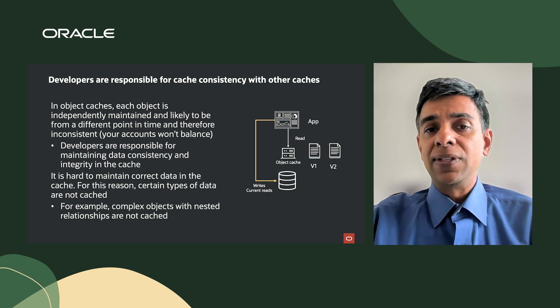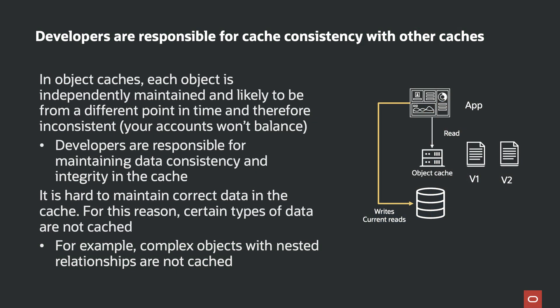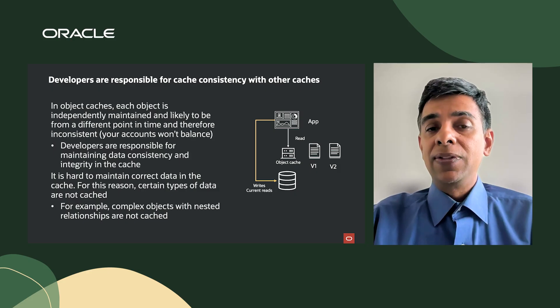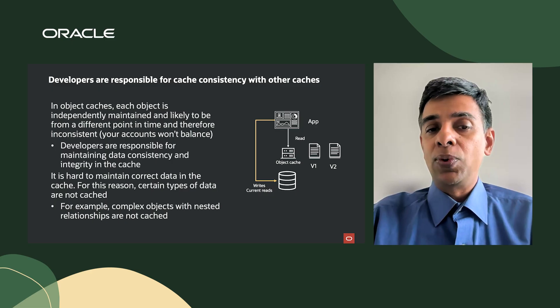Developers are also responsible for cache consistency with other caches. In object caches, each object is independently maintained, likely from a different point in time, and therefore inconsistent. If you have customers, orders, or line items — they are all related — databases maintain these relationships, but in your cache you have to do this manually. It is hard to keep data in the cache correct. For this reason, complex objects with nested relationships are often not cached at all, because the logic needed to keep them consistent is too complex.